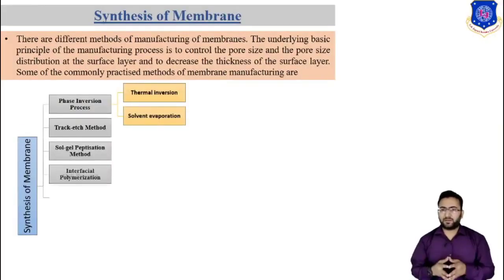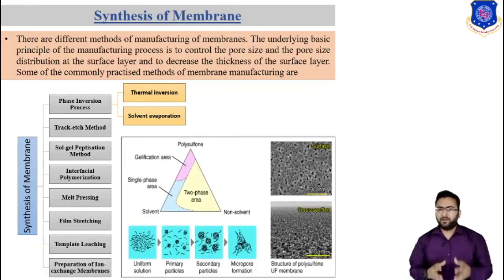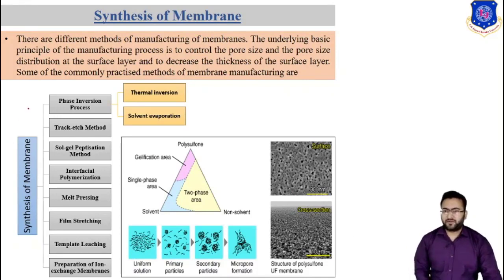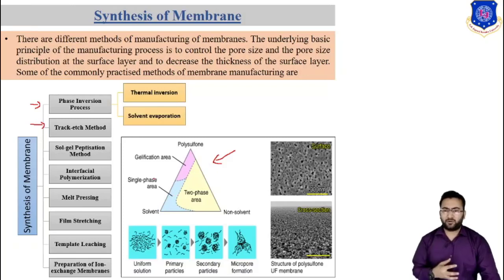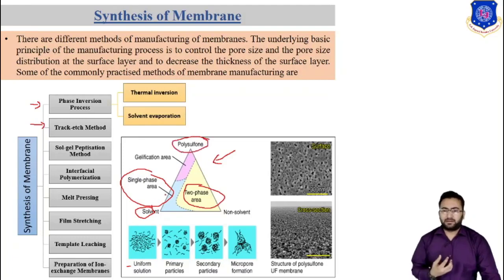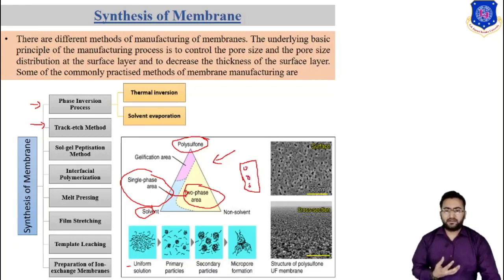We know that there are various different methods for manufacturing of membrane, and we already discussed various methods such as phase inversion process and track-etch method in previous sessions. In the phase inversion method, the phase is inverted — the phase changes during the process. Using this triangle, I explain how the phase change goes from a single phase to a two-phase system, where solidification of the membrane occurs. The liquid solvent that cannot convert into a solid is evaporated using heat, which makes pores on the membrane.